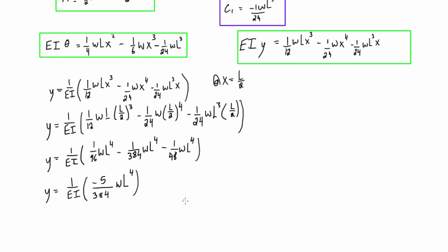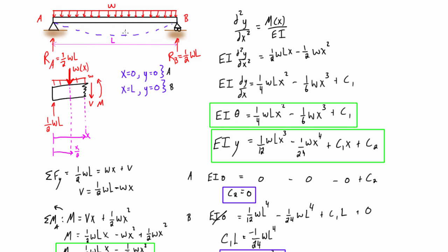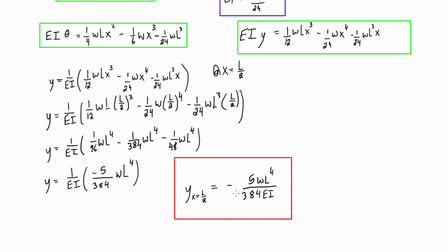And we can kind of just simplify that, that the y at x equals l over two, the cleanest way that we should write that would be, this is equal to negative five w, l to the power of four over 384 ei. So that, let me just put a box around that, that is the maximum deflection that we're experiencing in the simply supported beam, and it's happening at a distance of x equals l over two, so the max deflection in terms of w and l is this. If you had the actual numbers, if you had values for l and you had values for ei and w, we'd actually be able to calculate this in millimeters, but often you're asked just to put it in this form.